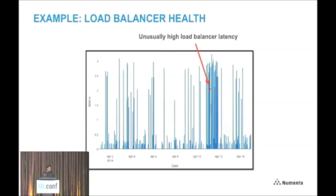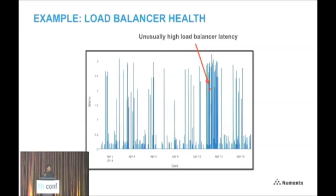Here are some example data sets. This particular one looks at the latency of load balancers on a website. Most of the time it's pretty low, with occasional spikes that are totally normal. This is a really unpredictable, hard data set. Near the right-hand side, there's an anomaly where the latencies ended up being a lot higher than normal — an example of an anomaly you'd want to detect as soon as possible if you're running a production website.